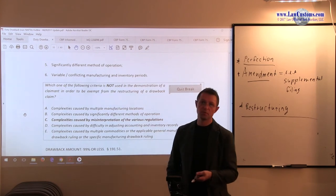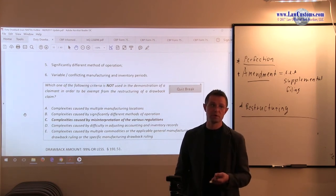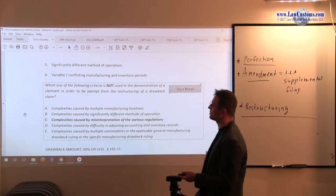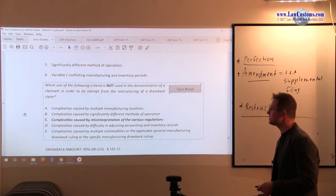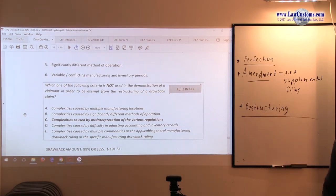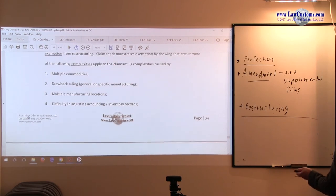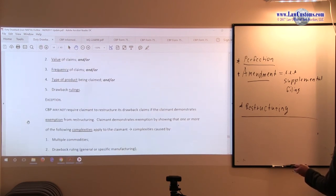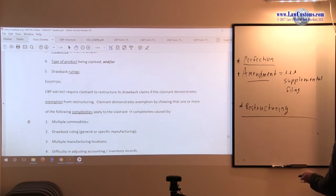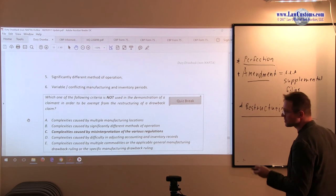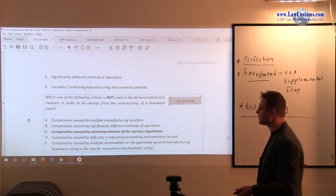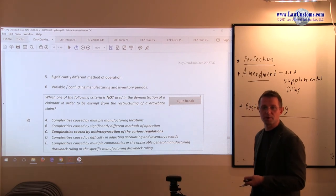Those exemptions are: multiple commodities, drawback ruling, multiple manufacturing locations, difficulty in adjusting accounting and inventory methods, significantly different methods of operation, variable conflicting manufacturing and inventory periods. The bottom line is that the restructuring should not be allowed if it makes it very burdensome for the drawback claimant to follow the customs efficiency. So what is easier for customs if it substantially makes the drawback claimant's life more difficult. Those can be broadly construed. They are pretty broad statements. If you can qualify, then you can respond to customs with a proposition to withdraw the request to restructure.